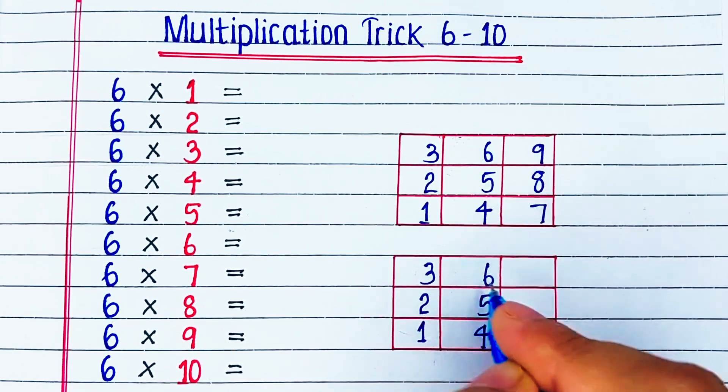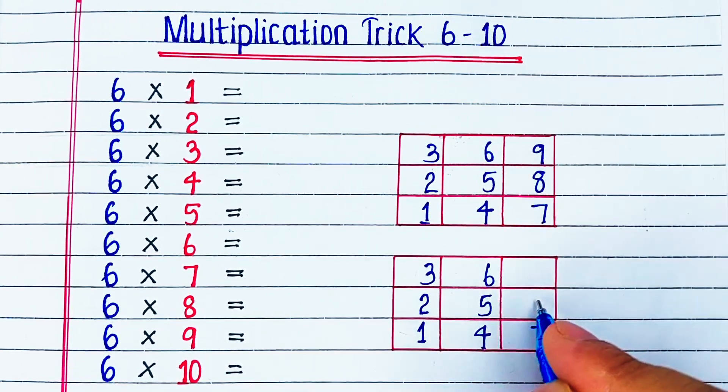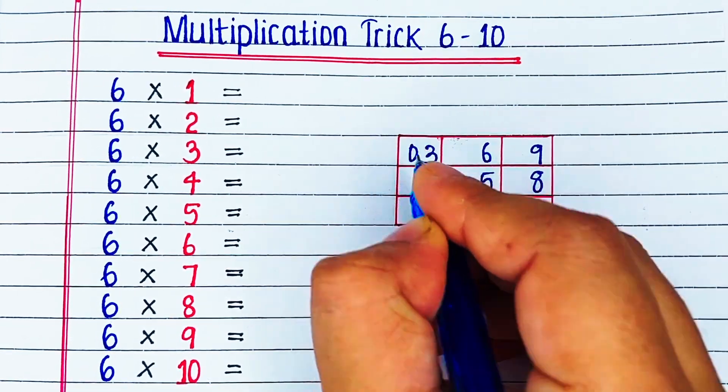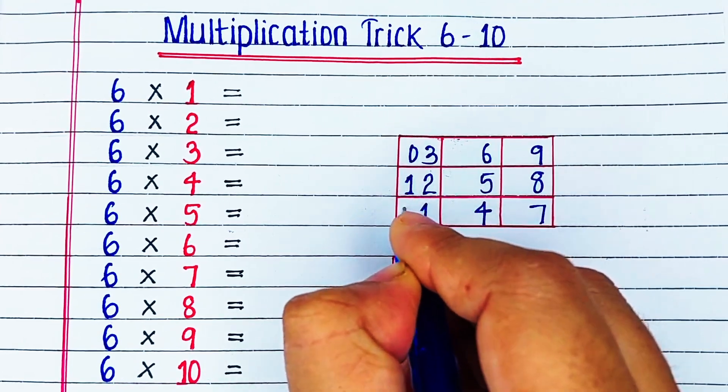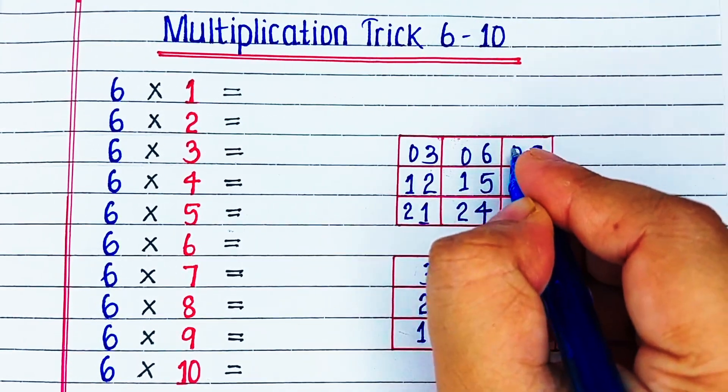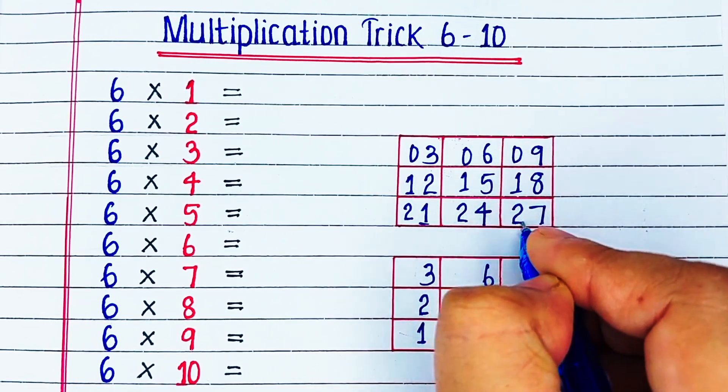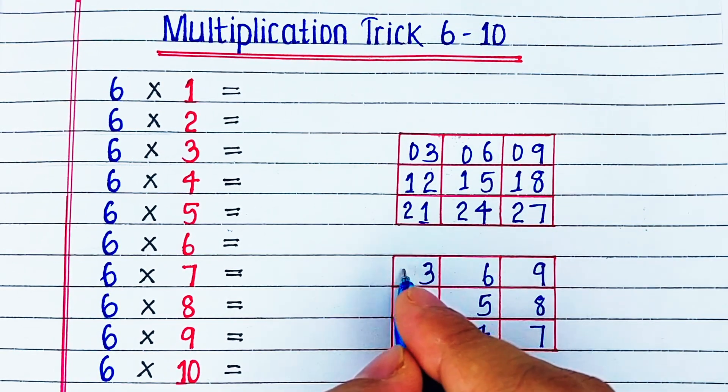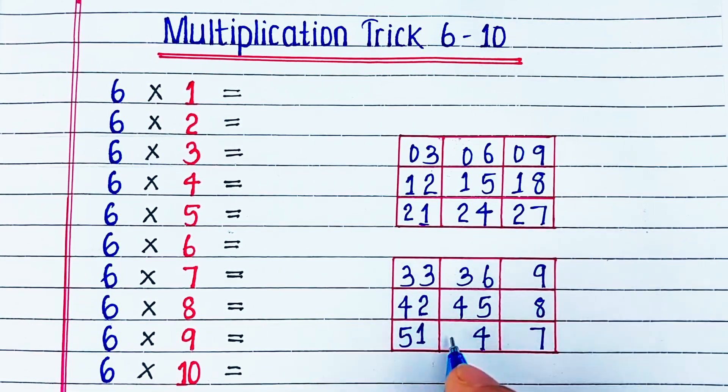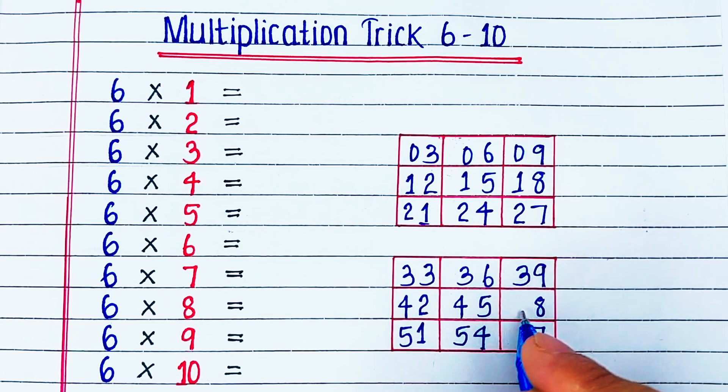These were the units digits. Now for the tens digit we will write 0, 1, 2 in the first column and we will repeat the same for the other two columns as well. For the other grid we will write 3, 4, 5 for the first column and we will repeat the same for the other two columns.